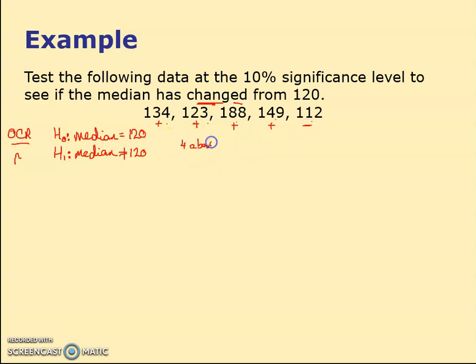I've got four above, one below. Is four above, one below enough difference from what I'd expect? With five numbers, I'd expect two and a half below and two and a half above, but you can't get half numbers, so it's a 3-2 split at best. We set up a binomial distribution: X is binomial with five numbers and probability 0.5, because if 120 is right, there should be half above and half below.